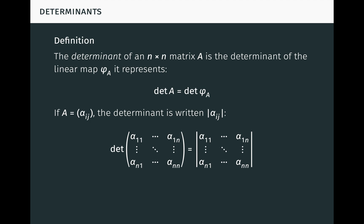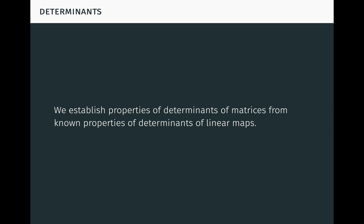This can be understood to mean the rows and columns of the matrix. Intuitively, from what we already know about determinants of linear maps, this definition tells us that det A is just the factor by which A scales n-dimensional oriented volume when viewed as a linear map. Using this definition, we can easily establish properties of determinants of matrices from known properties of determinants of linear maps.